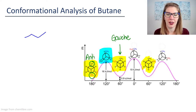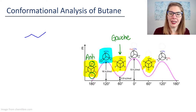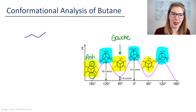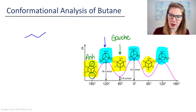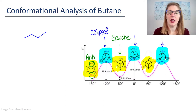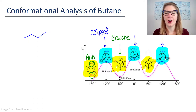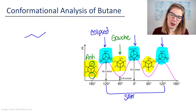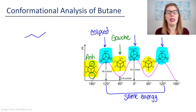It's just a different version of gauche where the CH3s are still 60 degrees apart—they're just in a different location with respect to one another. If we go back to the eclipsed conformations, these ones are still eclipsed. These three eclipsed conformations are not all the same energy. The first one and the third one are the same energy.